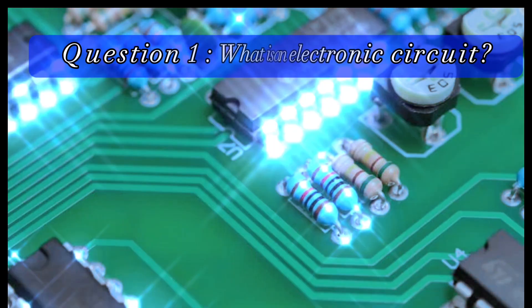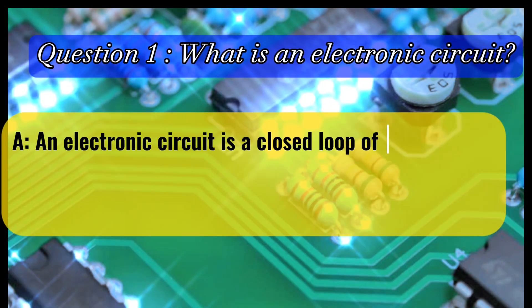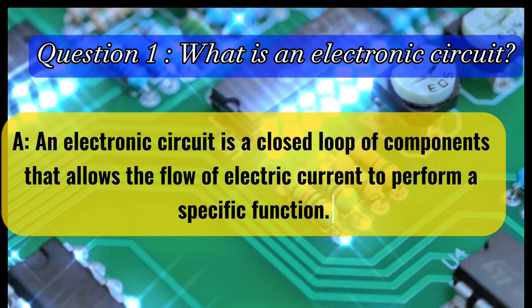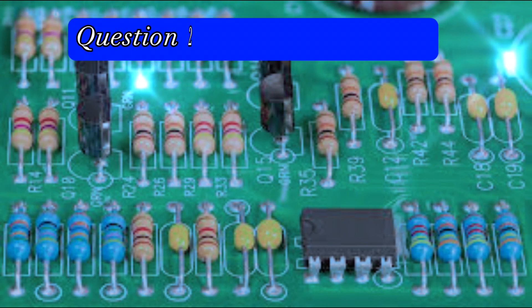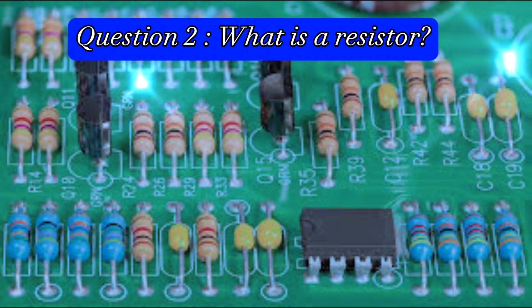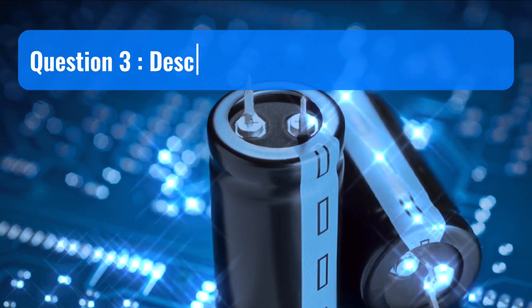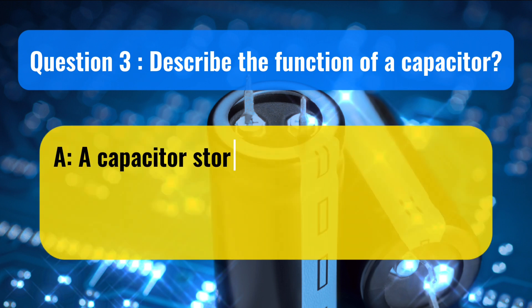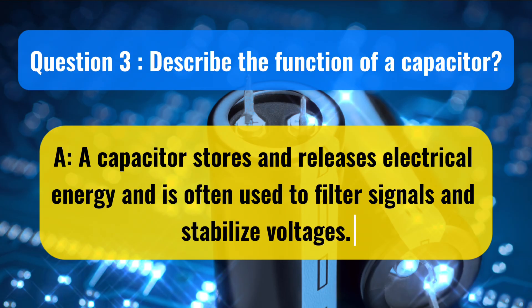Question 1: What is an electronic circuit? An electronic circuit is a closed loop of components that allows the flow of electric current to perform a specific function. Question 2: What is a resistor? A resistor is a passive electronic component that limits the flow of current in a circuit. Question 3: Describe the function of a capacitor. A capacitor stores and releases electrical energy and is often used to filter signals and stabilize voltages.